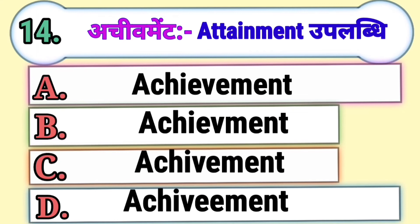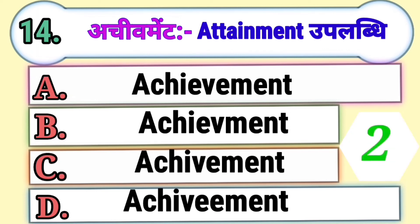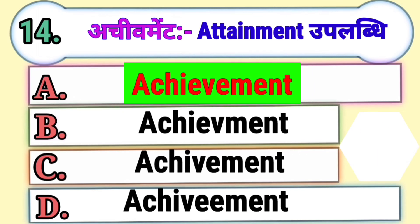Question 14. Achievement means Attainment or Uplabdhi. Choose the correct spelling of achievement. Option A, Option B, Option C, or Option D. The correct answer is Option A, Achievement.